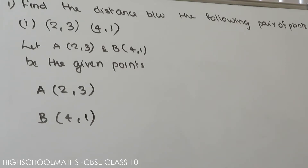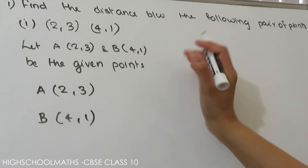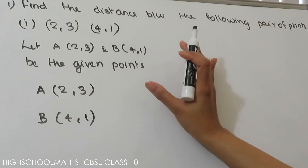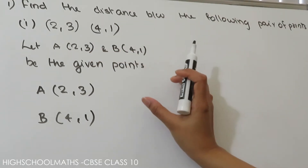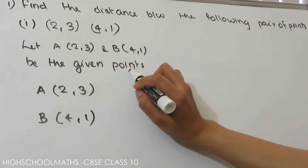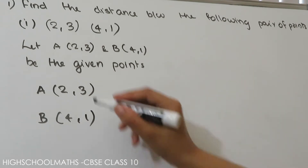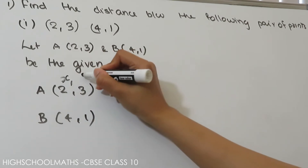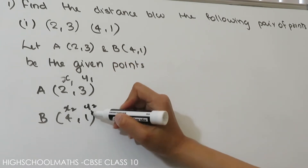First question: Find the distance between the following pairs of points. We will apply the distance formula. Let's start with the given points. We label them as x1, y1 and x2, y2. We can apply the distance formula.